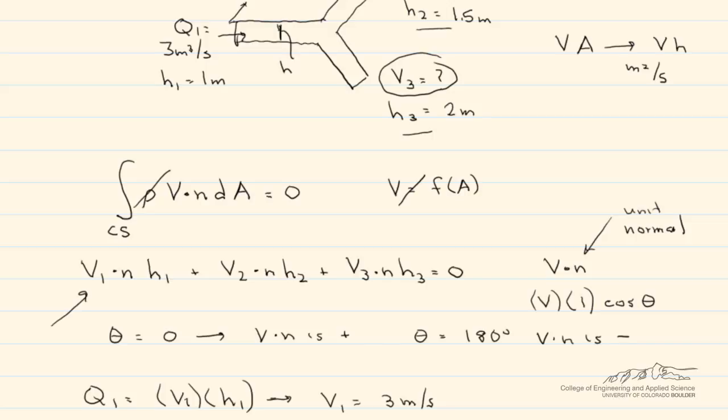However, what we don't have yet is V1·n. If you notice, the angle between the velocity and the unit normal out of the surface is 180 degrees. So that ends up being negative 1, and V1·n is actually -3 meters per second.